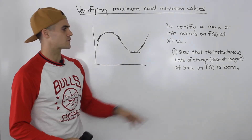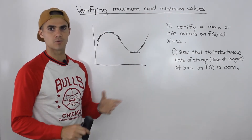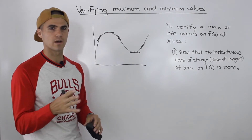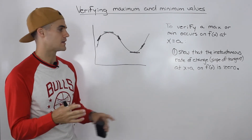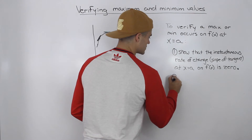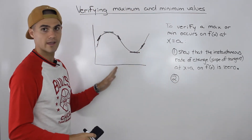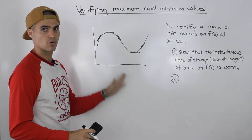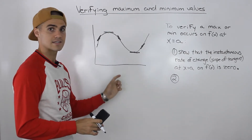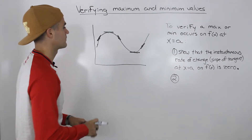But notice after this first step, we're only going to know that the point we're dealing with is a max or a min — but we're not going to know which one it is yet. So that's what we're going to take care of in step two. Step one tells us a point is a max or a min; we don't know which one yet. Then step two is going to tell us whether this is a minimum point or a maximum point.